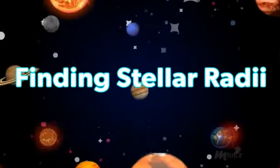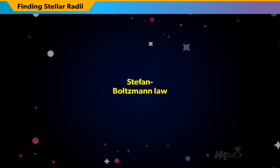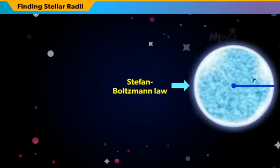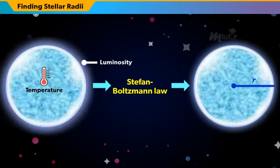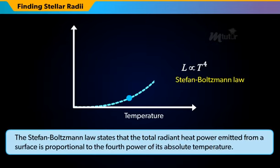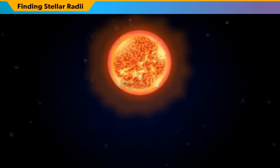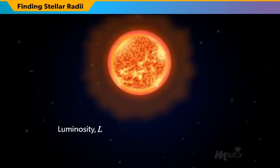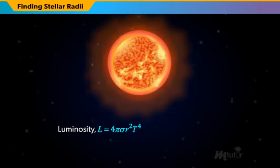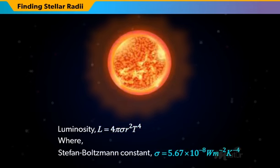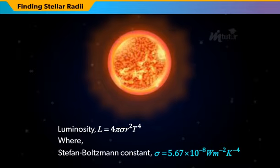Scientists usually use the Stefan-Boltzmann Law to find the stellar radii of a star with known luminosity and surface temperature. The Stefan-Boltzmann Law states that the total radiant heat power emitted from a surface is proportional to the fourth power of its absolute temperature. For a sphere of radius R emitting blackbody radiation at temperature T, its luminosity L can be written as L = 4π·σ·R²·T⁴, where the Stefan-Boltzmann constant sigma equals 5.67 × 10⁻⁸ watts per meter squared per Kelvin to the power of four.